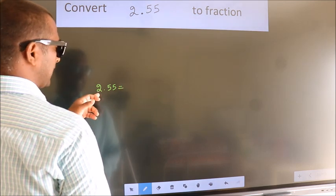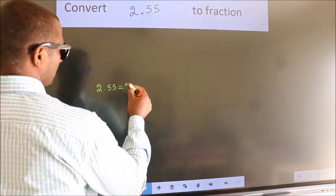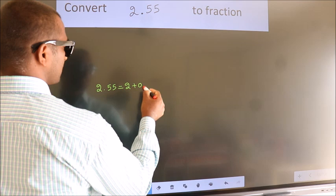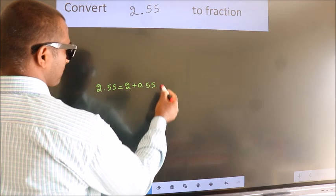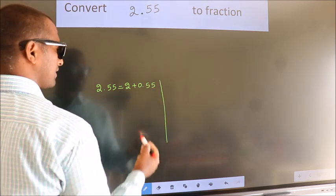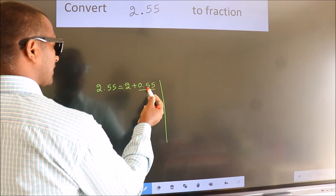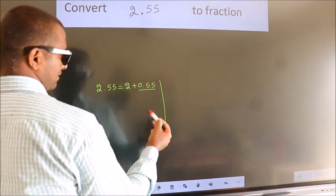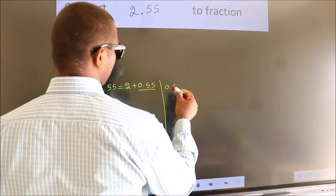First we should break this into 2 plus 0.55. Next convert this to fraction. So 0.55.